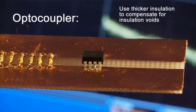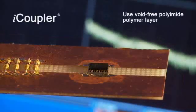Optocouplers use an injection-molded polymer epoxy in the package assembly. Epoxy can allow insulation voids, so optocouplers use thicker insulation to compensate. Our iCoupler digital isolators use a thin, void-free polyimide polymer layer deposited during wafer fabrication.